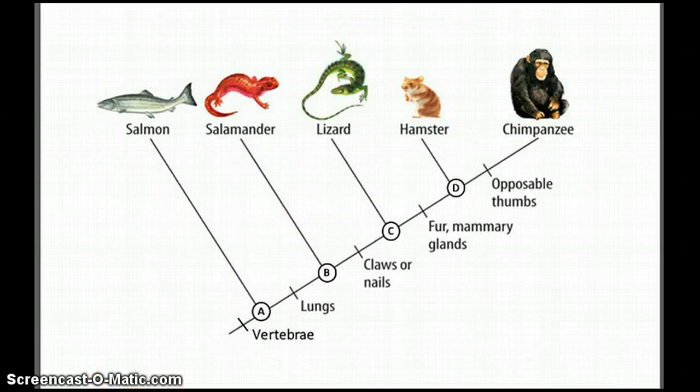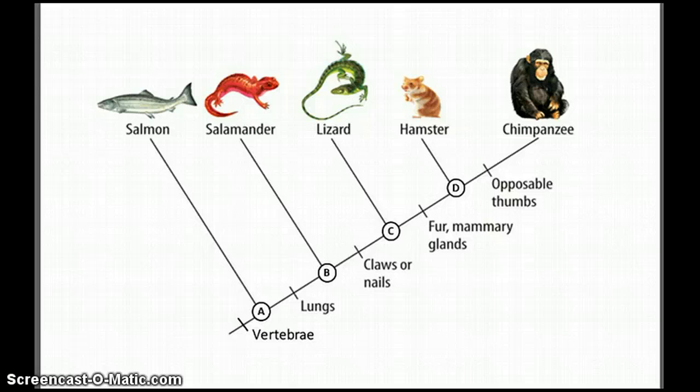In quick review, a cladogram is a diagram that shows evolutionary relationships, and the way it works is that it arranges the organisms across the top and gives you their evolutionary lineage. It also shows you which organisms are most closely related by illustrating the common ancestors between them.